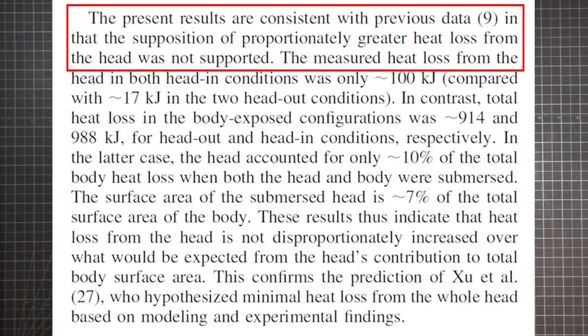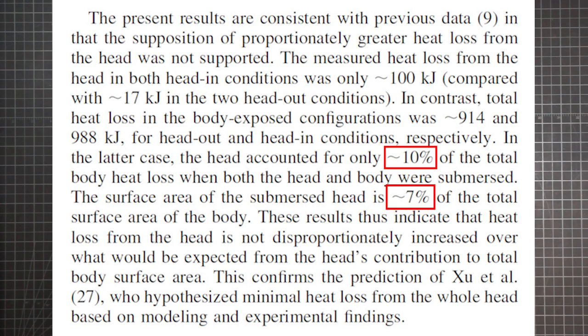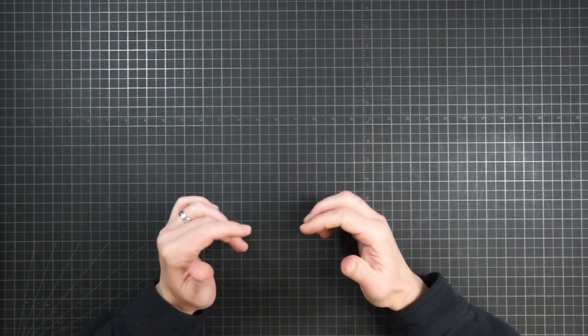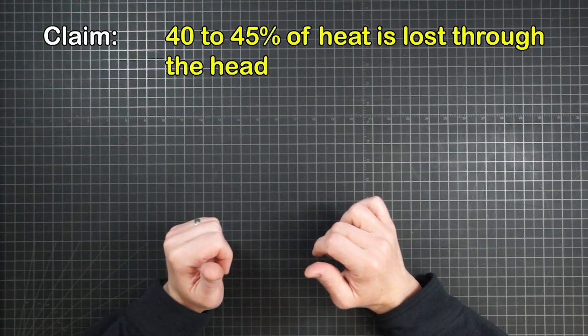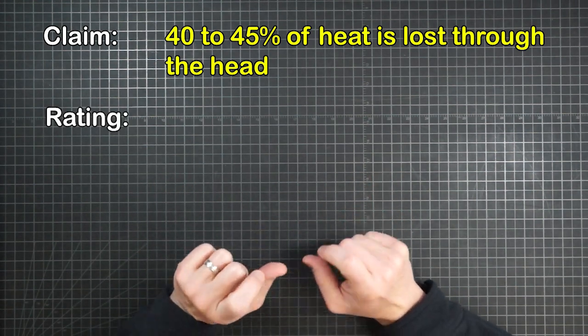So regarding the central question of whether or not the head experiences extraordinary heat loss, the study authors state, the present results are consistent with previous data in that the supposition of proportionately greater heat loss from the head was not supported. The head, which is about 7% of surface area, accounted for approximately 10% heat loss. These results thus indicate that heat loss from the head is not disproportionately increased over what would be expected from the head's contribution to whole body surface area. Technically you could argue that a 10% loss from 7% area is at least a small amount of overrepresentation. But remember that our original claim was 40 to 45% from the head, when these results indicate it's actually more like 10%. So on that basis, I'm prepared to rate the claim as false.